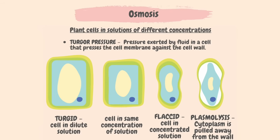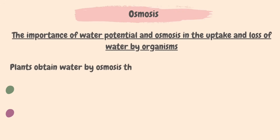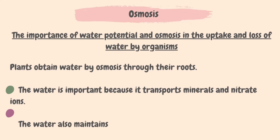Here's a picture comparing plant cells when they are immersed in solutions of different concentrations. We must understand the importance of water potential and osmosis in the uptake and loss of water by organisms. Plants obtain water by osmosis through their roots, because of the difference in water potential between the soil and inside the roots. Water is important because it transports minerals and nitrate ions and maintains the turgidity of the cell, providing support and strength for the plant. If plants lose more water than they gain, their cells will become flaccid and the plant will wilt.